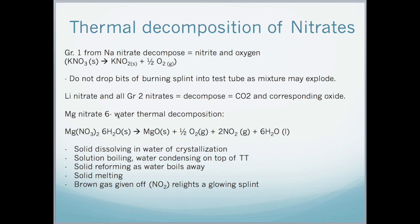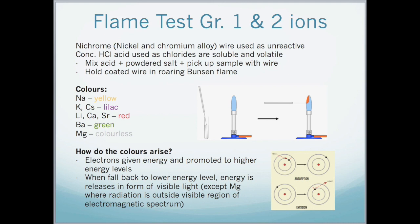Here I have an example of magnesium nitrate hexahydrate being decomposed. First, we have magnesium oxide solid forming, oxygen gas, nitrogen dioxide, and 6 molecules of water. When we carry out this in the lab, the solid will first be dissolving in water of crystallization, the solution will then be boiling with water condensing on top of the test tube, the solid will then be reforming as the water boils away, then the solid melts, and finally a brown gas — nitrogen dioxide — will be given off, which can relight a glowing splint. We would use nichrome wire, which consists of nickel and chromium and is an alloy, used because it is very unreactive.